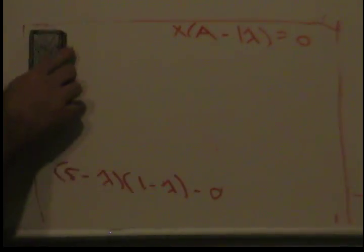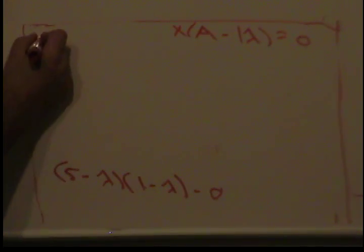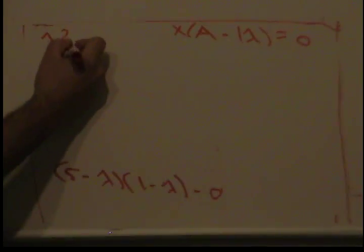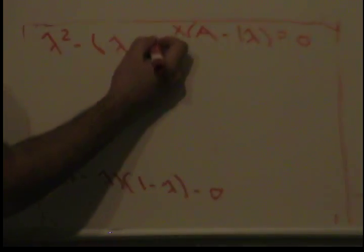When we foil this out, we simply get lambda squared minus 6 lambda plus 5.